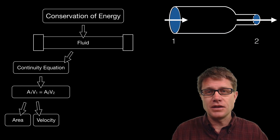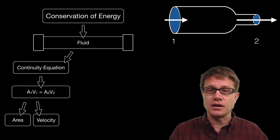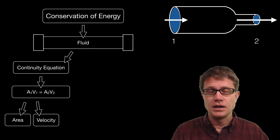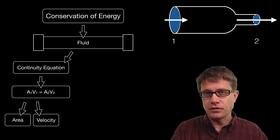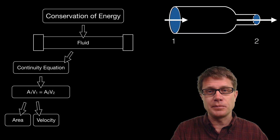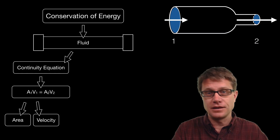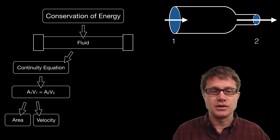An application of this: if you have ever had a hose, as water comes out it has a large cross-sectional area. If you put your thumb in front of it, you are decreasing the cross-sectional area. What happens to the velocity? It increases.